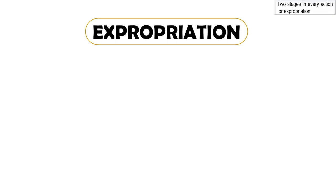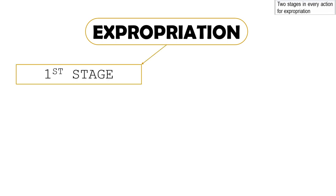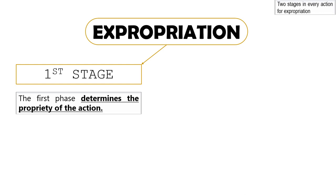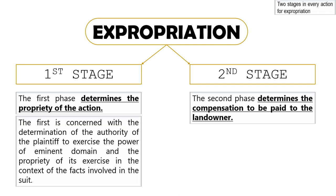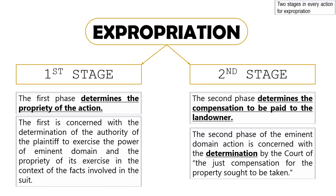What are the stages in an action for expropriation? There are two. The first stage or first phase determines the propriety of the action — specifically, the authority of the plaintiff to exercise the power of expropriation and the propriety of its exercise in the context of the facts involved in the suit. The second stage or second phase determines the compensation to be paid to the landowner — the court determines the just compensation for the property sought to be taken.